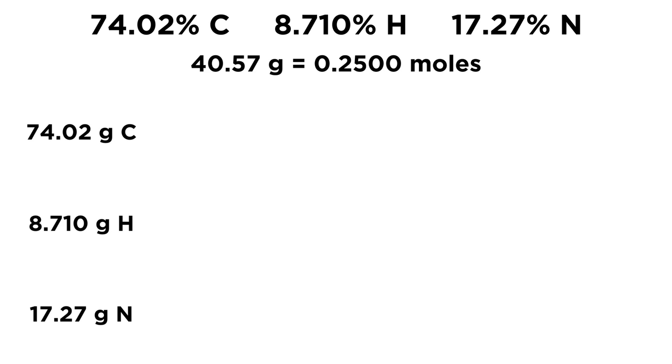Now, we need to convert these into moles, because masses don't tell us anything. Whenever we are doing calculations of this nature, we always want moles. So let's take our mass of carbon and multiply by 1 mole over 12.01 grams. That is the atomic mass of carbon. Grams will cancel, and we have 6.163 moles of carbon in our hypothetical sample of nicotine.